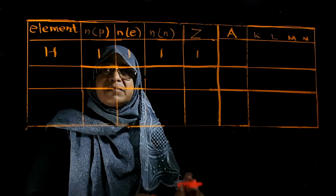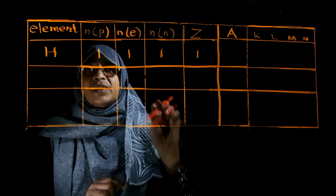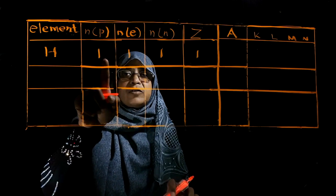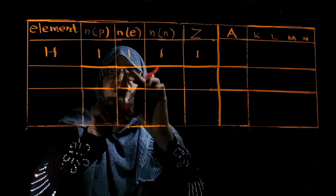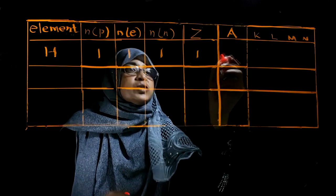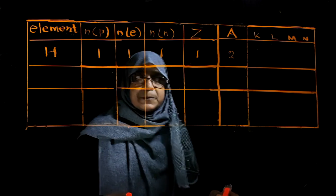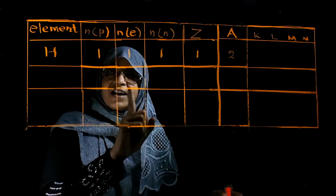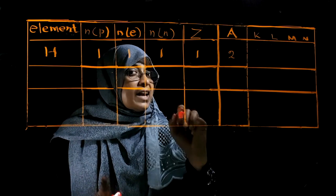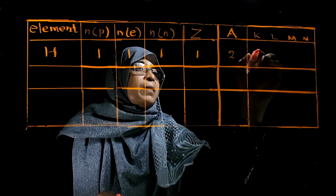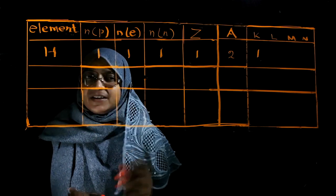The mass number is the number of protons plus the number of neutrons. In hydrogen, the proton is 1 and the neutron is 1, so the mass number is 1 plus 1, which equals 2. Now we write the electronic configuration. There is only one electron in hydrogen, so it first fills into the first energy level.